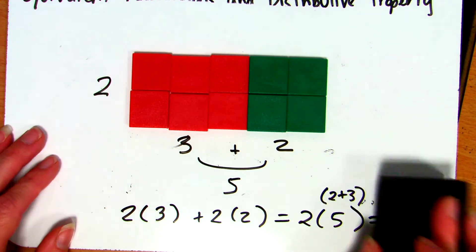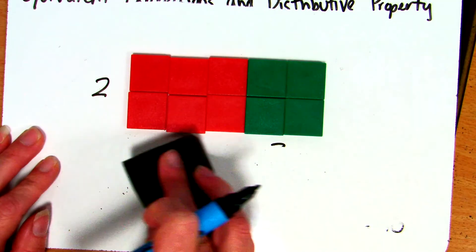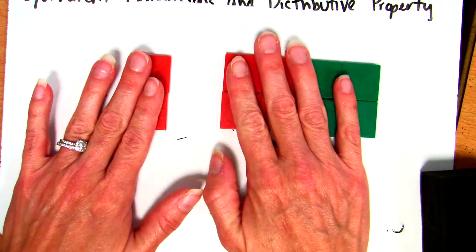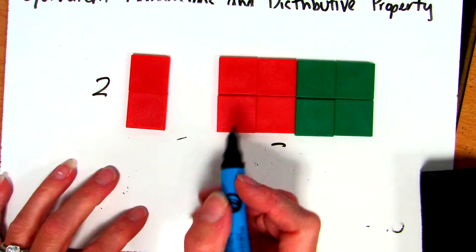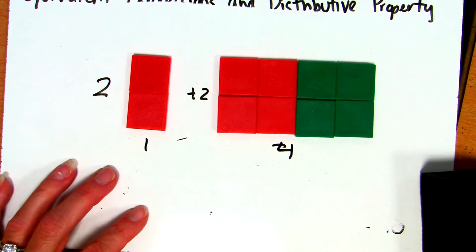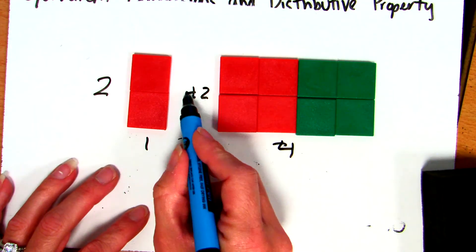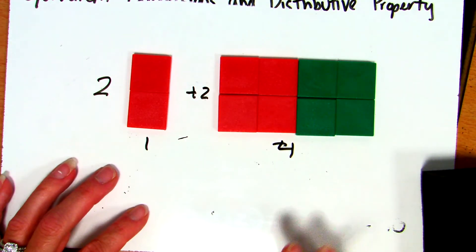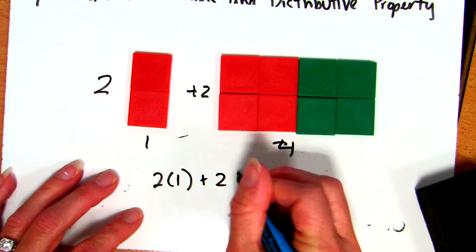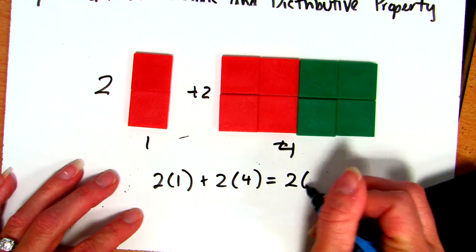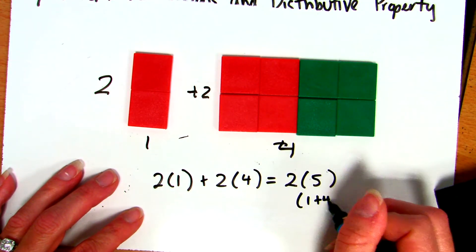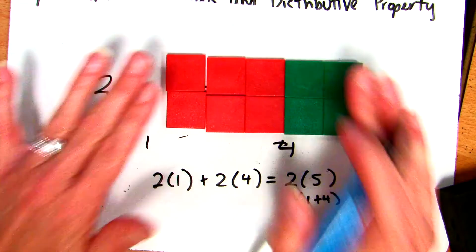We're doing different representations of the number 10, and we could keep going — we could break it in different ways. If we broke it back up, we could say: 2 rows of 1 plus 2 rows of 4. I still have 10 things. If I put them all back together, 2 times 1 plus 2 times 4 is the same as 2 times 5, because 5 is just 1 plus 4.